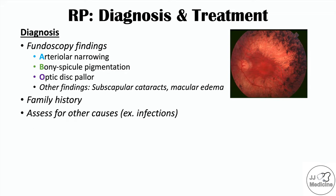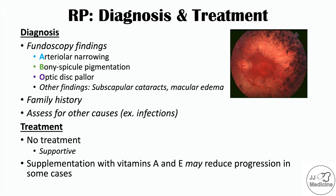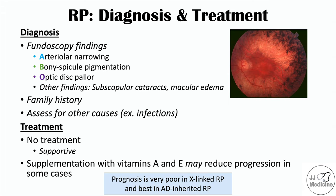Because retinitis pigmentosa is a hereditary condition, there is no curative treatment — management is supportive. There can be some supplementation with vitamins A and E, which may reduce the progression in some cases, although some evidence suggests this may not always be effective. The prognosis depends on the underlying genetic cause: X-linked retinitis pigmentosa carries a very poor prognosis, while autosomal dominant inherited retinitis pigmentosa has a relatively better prognosis.